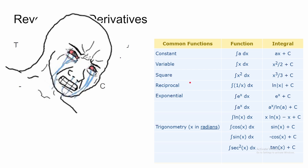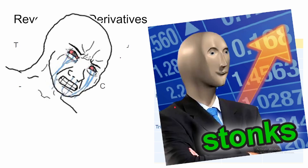So let's go over some common functions and their integrals. The integral of a constant a with respect to x is just ax plus C. The integral of x with respect to x is just x² over 2 plus C. You can see how they're integrals by seeing how if you take the derivative of these functions, you get the original. The integral is just the opposite of the derivative.